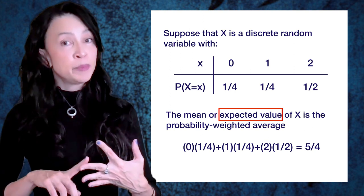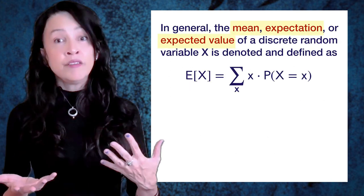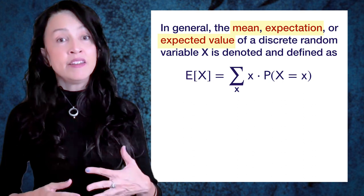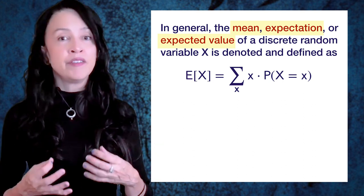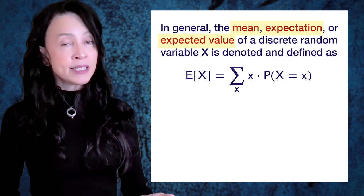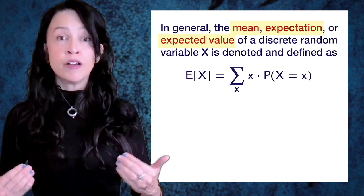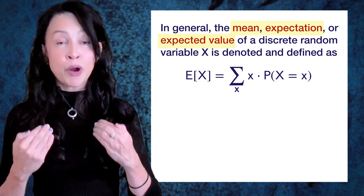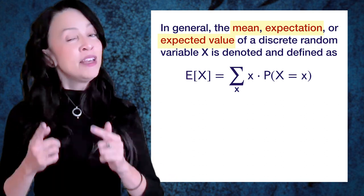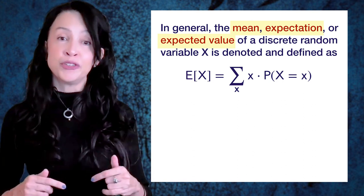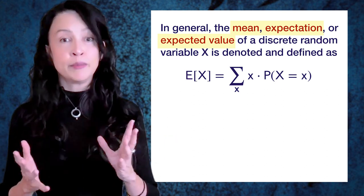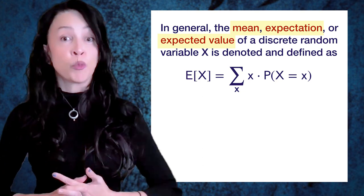In general, the mean, expectation, or expected value - these are all terms for the same thing - of a random variable is denoted by E[X]. For a discrete random variable, it's defined to be the sum of each possible value x times the probability that the random variable capital X takes on the value little x. This sum should be over the support of your distribution, the places where it is meaningful and the probabilities are non-zero. It doesn't hurt to throw more x's in here, because those extra values will disappear since the probability that X equals those values is 0.